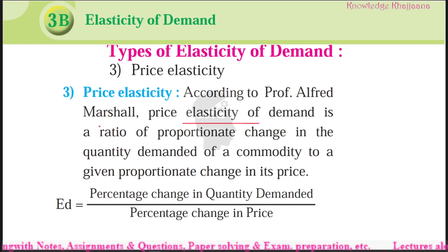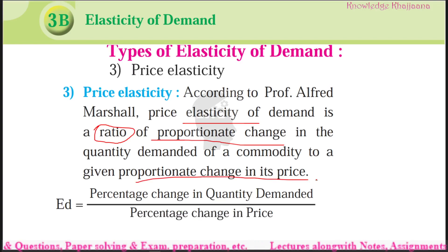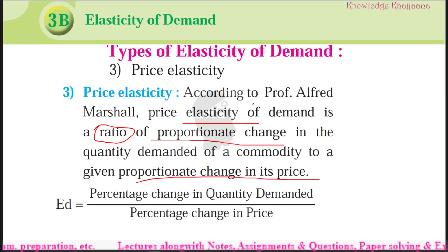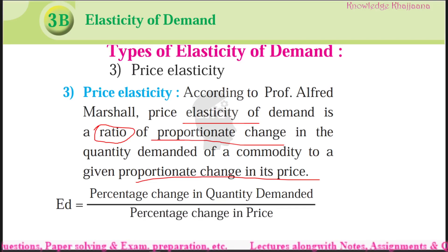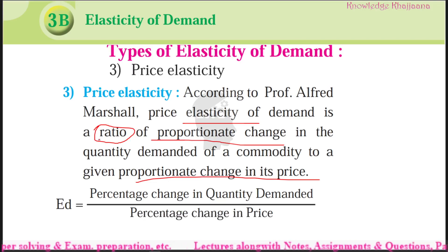Elasticity of demand is a ratio — a ratio of proportionate change in the commodity's demand to a given proportionate change in its price. Proportionate means we have to refer to the change in demand and then consider the proportionate change. The relationship — in simple words, we are going to examine the relationship and the formula for elasticity of demand.